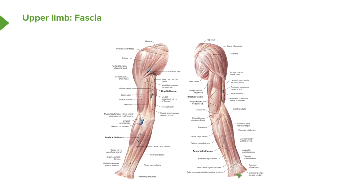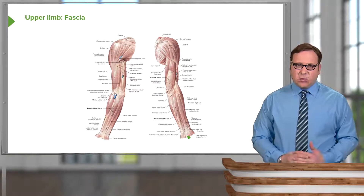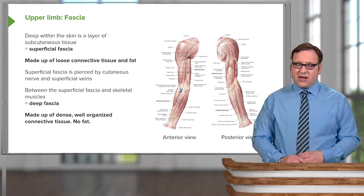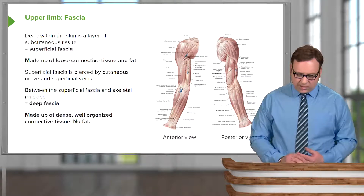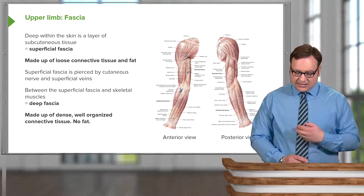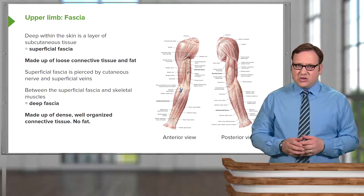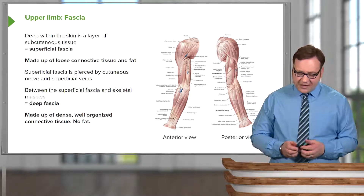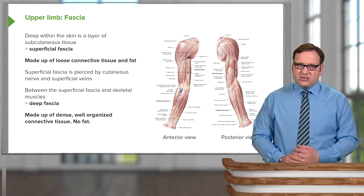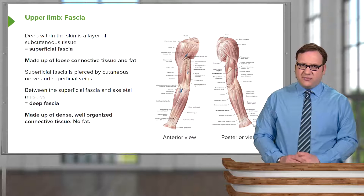Here we can see both an anterior and a posterior view of the upper limb. Covering all of the muscles is a white glistening layer — this is the deep fascia. We call it deep fascia because we also have superficial fascia, which lies deep to the skin; the skin has been removed in these images. The superficial fascia is this loose connective tissue and fatty layer, and it's pierced by cutaneous nerves that supply the skin and also by superficial veins.